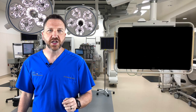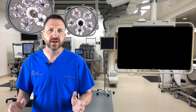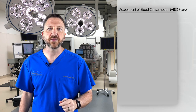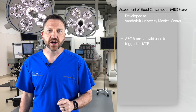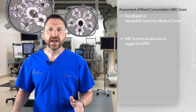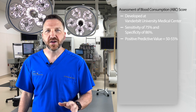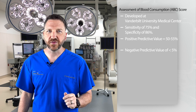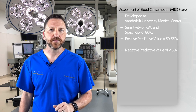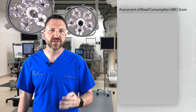Determining the need to initiate the massive transfusion protocol is not always an easy one. The American College of Surgeons Committee on Trauma recommends utilizing the Assessment of Blood Consumption, or ABC score, as an aid to trigger an MTP. The ABC score is well-validated and is 75-90% sensitive and specific. However, it can overestimate the need for activation of the MTP protocol by 45-55%. On the flip side, its negative predictive value is very good at less than 5%.